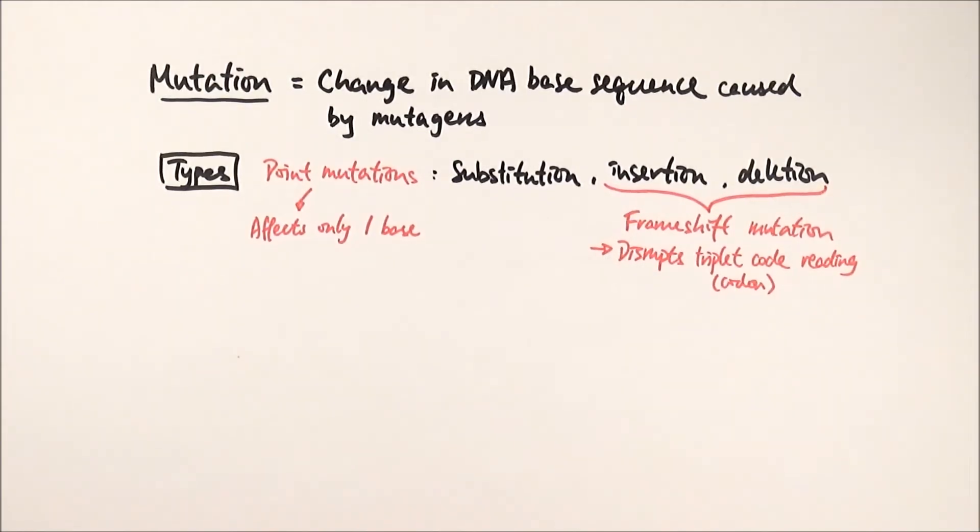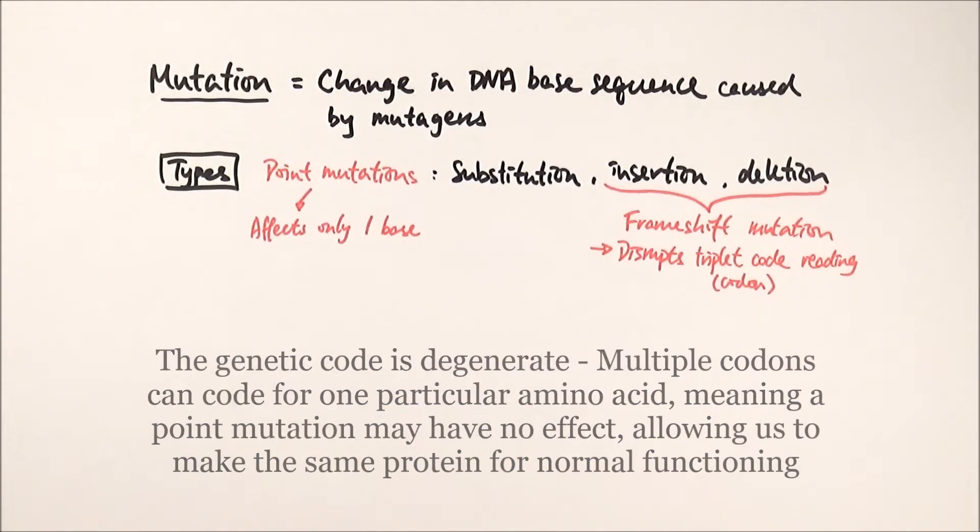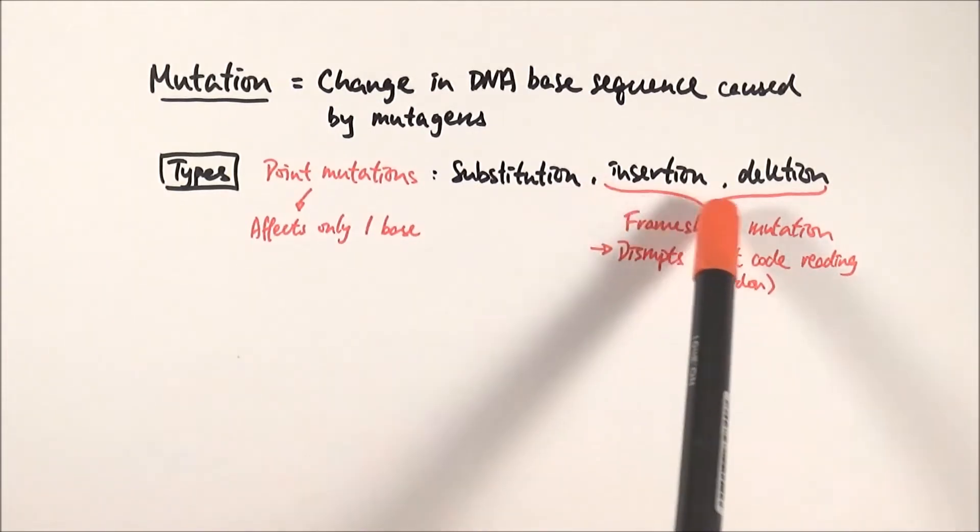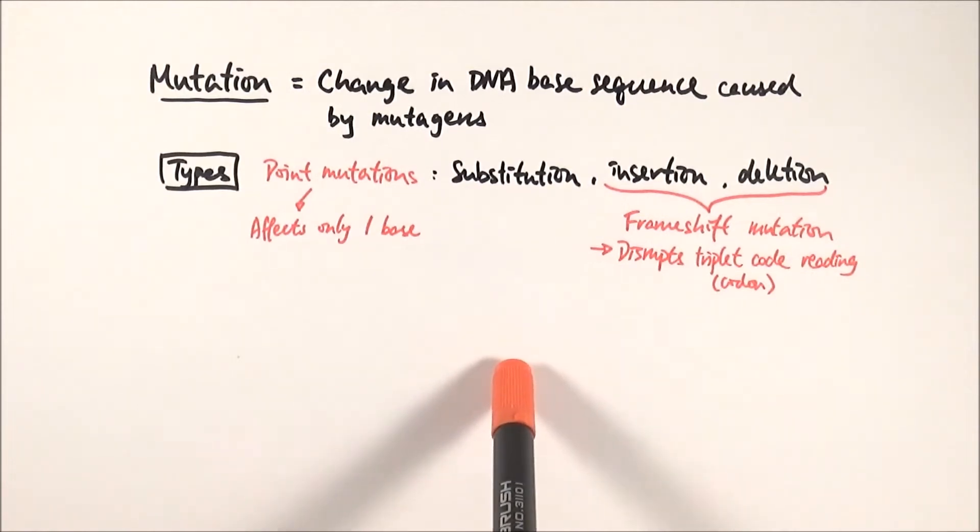We say that the genetic code is degenerate, meaning that even if we do have substitution happening, it can still code for the same amino acid. However, with insertion and deletion, because you're basically shifting the entire thing, the triplet codon will be read differently and that will cause a different type of protein to be made.